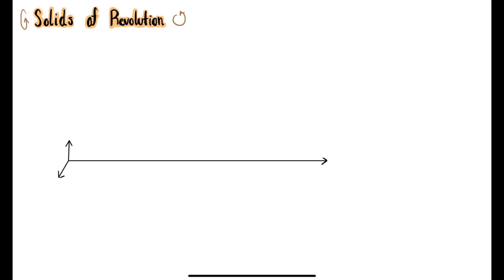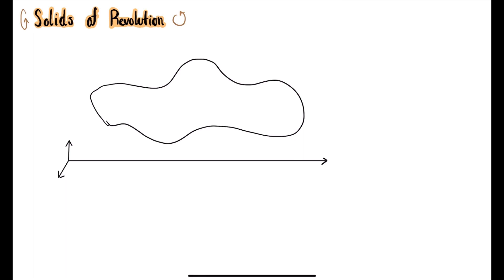So in order to understand this concept, let's say that we have some really weirdly shaped object that goes from A over to B. So how do we find the volume of something like this, something so weirdly shaped? What we have to do is chop it up into a million little pieces. So let's say one of these pieces is at x, and let's find the cross section at x.